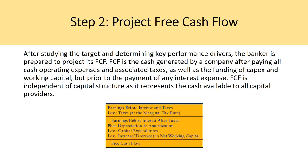With unlevered free cash flow, you start at EBIT, take away taxes to get NOPAT (net operating profit after tax), add back depreciation and amortization, subtract capital expenditures, and subtract any increase in net working capital to get unlevered free cash flow. This is unlevered — we haven't accounted for interest expense, so debt holders have not been paid. Therefore this cash is attributable to both debt and equity holders, representing the cash available to all providers of capital.